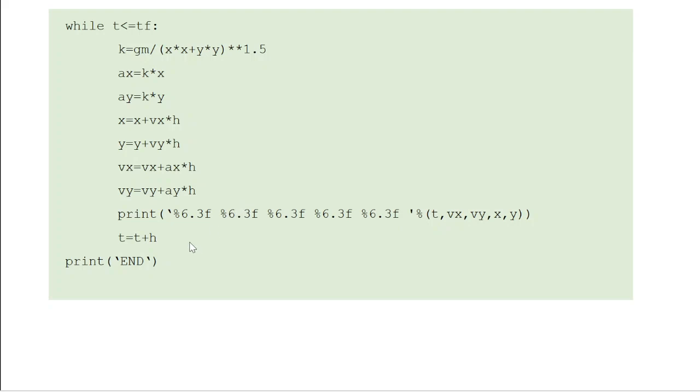Once you calculate the parameters, you print them. Then you go to the next sub-interval by incrementing the time axis. So you keep doing that. Once you come to the end of the intervals, you come out of this loop and print 'END'.